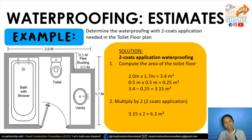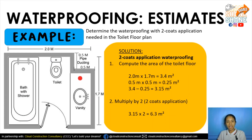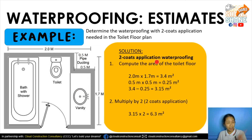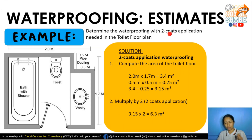Lastly, for how to estimate waterproofing, it's as simple as computing the area. For this example, determine the waterproofing with two-coat application needed for a toilet floor plan with dimensions of 2 meters by 1.7 meters, with a 0.5m by 0.5m pipe ducting cutout at a corner. The area is 2 × 1.7 minus the cutout, giving 3.15 square meters. Multiplied by 2 coats, the total area of application is 6.3 square meters.